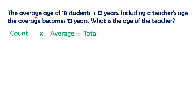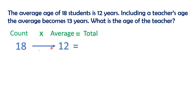The average age of 18 students is 12 years. Count is 18, average age is 12. Count into average equals total: that is 18 into 12. 18 students' total age is 216 years.